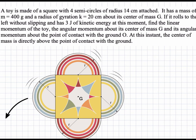In this problem, there's a toy made with four semicircles of radius 14 centimeters attached to a central square. This toy has a mass of 400 grams and a radius of gyration of 20 centimeters about its center of mass G. It is rolling to the left about O without slipping, and has a kinetic energy at this instant of 3 joules. At this instant, the center of mass is directly above the point of contact with the ground O.